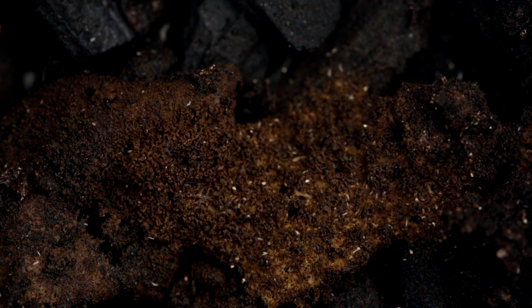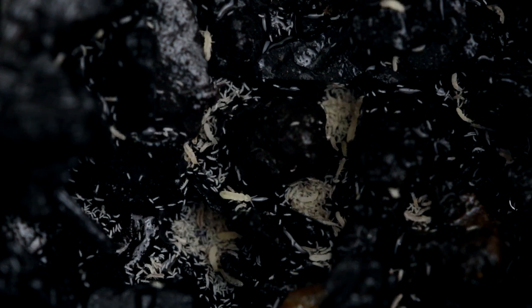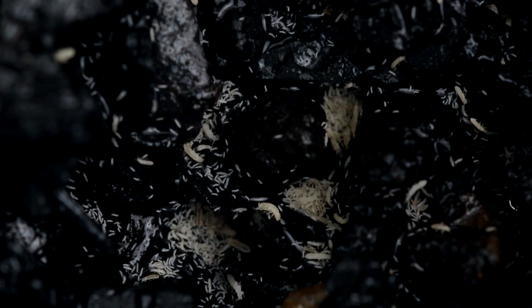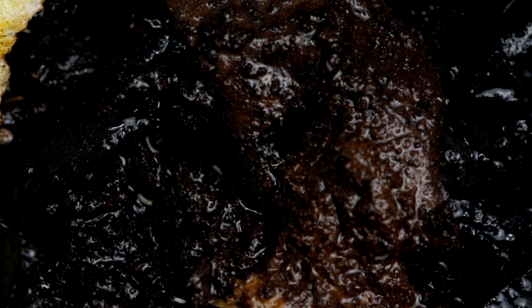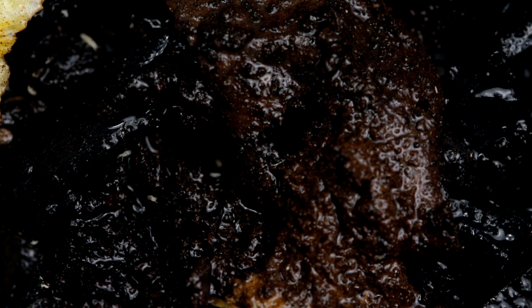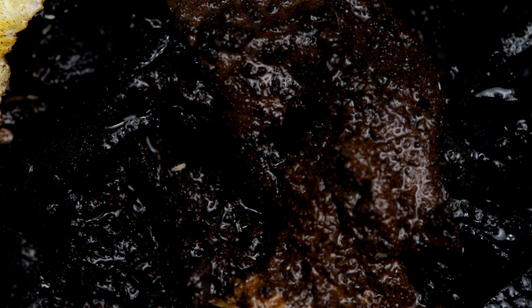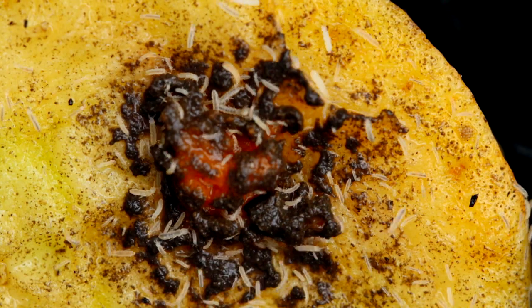Springtails, which are sometimes referred to as springs, are tiny creatures which were once considered insects, but they're now classified as hexapods. There are many different species which vary in size, appearance, and habitat, but in general, they're about an eighth of an inch long or less, and they live in wet and humid conditions with decaying matter. They're found almost everywhere in the world.